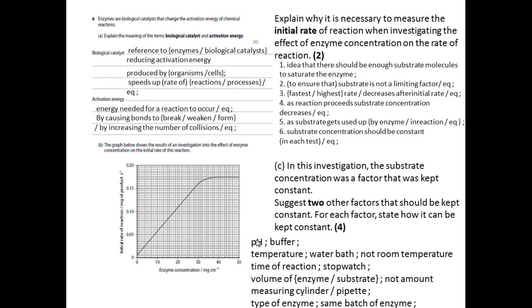Probably the most obvious ones would be pH, temperature and time. And therefore, those ones are quite straightforward. You get one mark for saying the factor and then another mark for saying how it is controlled. So for instance, pH one mark, buffer another mark.